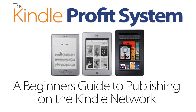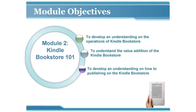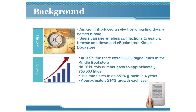The Kindle Bookstore 101. The objectives for module two are: an introduction and understanding of the operations of the Kindle bookstore, to understand the value of the Kindle bookstore, and an overview of how to publish on it. If you've chosen the self-publishing route, Amazon will be your primary sales channel and it offers a number of advantages when publishing your book.